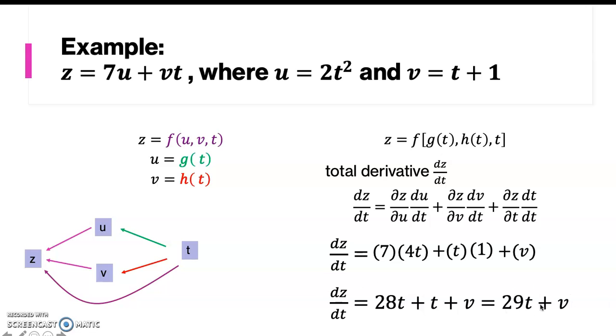This result you can also obtain by inserting from this composite function, so you just insert this 2t squared for u, and t plus 1 here for v.